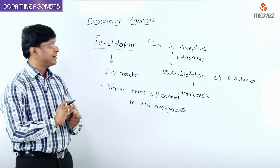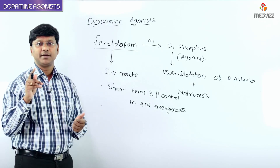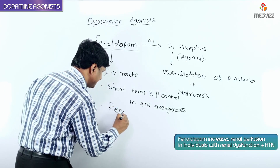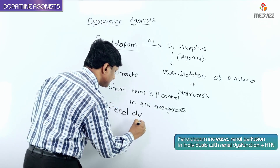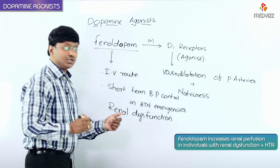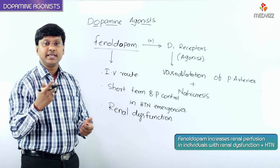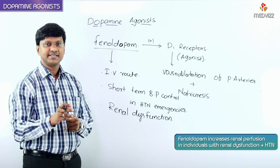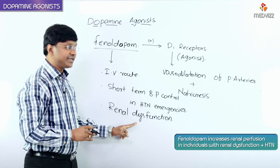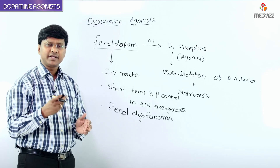Fenoldopam is particularly indicated in those individuals where there is renal dysfunction. In renal dysfunction patients, fenoldopam will improve the renal perfusion. That is the reason why in individuals with hypertension associated with renal dysfunction, the drug of choice that can be given is fenoldopam.